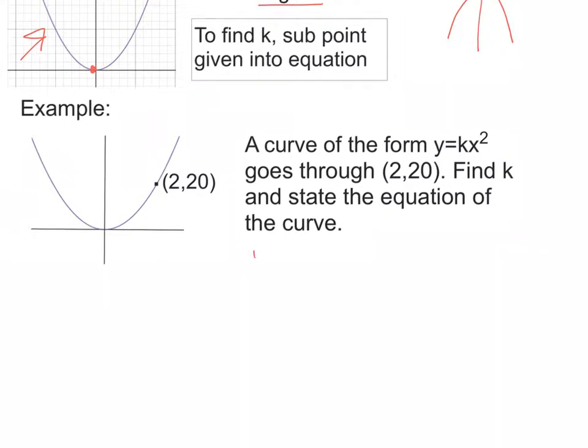So our equation is y equals kx squared. And I'm going to sub in the point (2, 20). So the 2 is the x value and 20 is the y value. So we're going to get 20, so replace the y with 20, is equal to k times 2 squared.